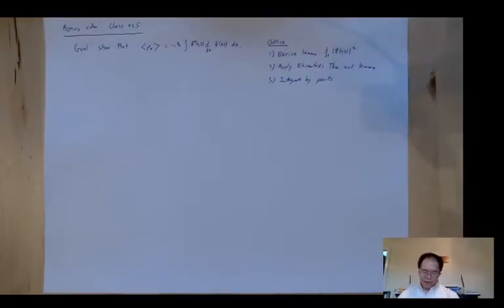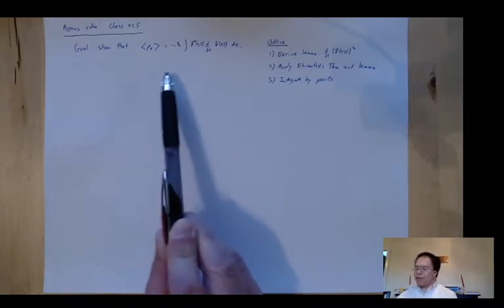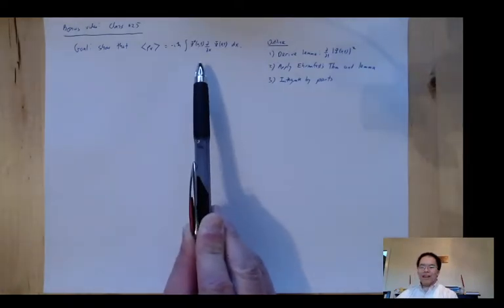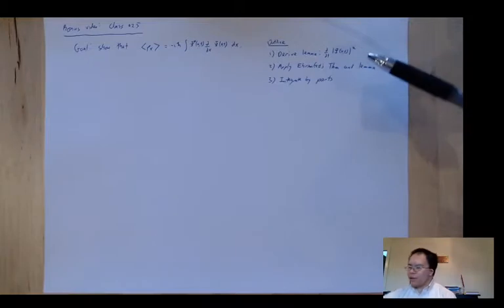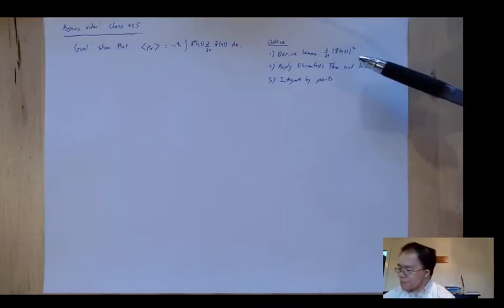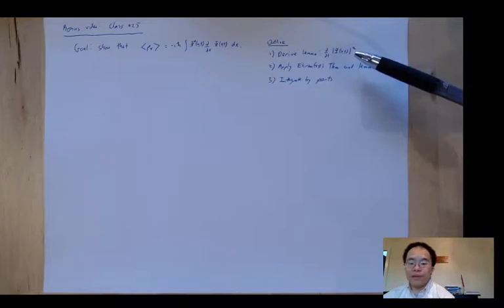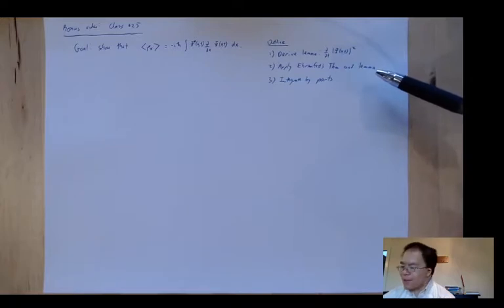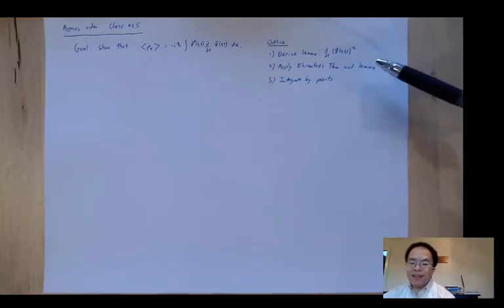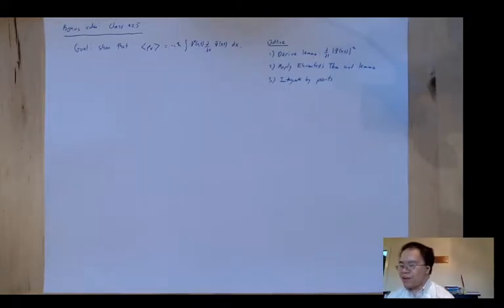So what we're going to do today is as follows. Our goal is to show what I asserted in the main video about the momentum expectation value. Because this is going to be kind of long and involved, I'm going to outline what we're going to do. First we're going to have to derive a lemma, a result that's going to help us. Specifically we need to work out something about the time derivative of the probability density. Then we'll apply Ehrenfest's theorem and this lemma in order to calculate the expectation value of p sub x.